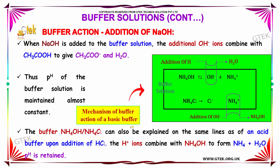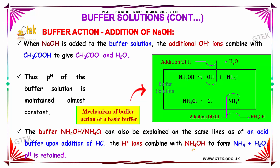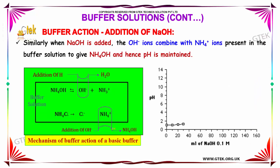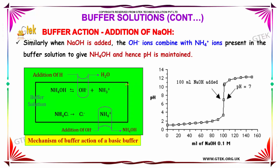The buffer NH4OH or NH4Cl can also be explained on the same lines as an acid buffer upon addition of hydrochloric acid. The H+ ions combine with NH4OH to form NH4+ and H2O, in which the pH is retained. This is about addition of NaOH.